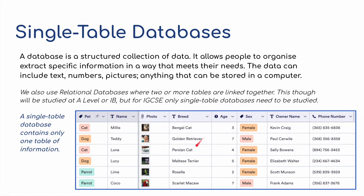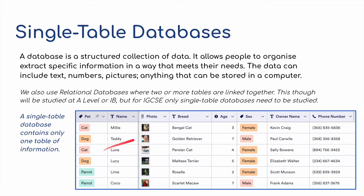For example, we have a database here for a vet surgery and you can see we've got some cats stored under the name 'pets'. We've got the names of the animals, photos of the pets, the breed of the particular animal, how old the animal is, whether it's male or female, who the owner is, and a contact phone number. All this information has been stored in this particular table, which we call a single table database.